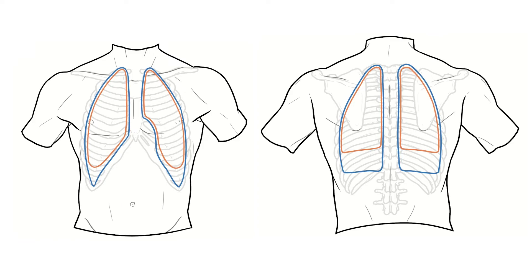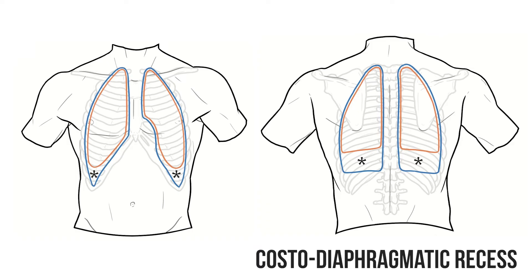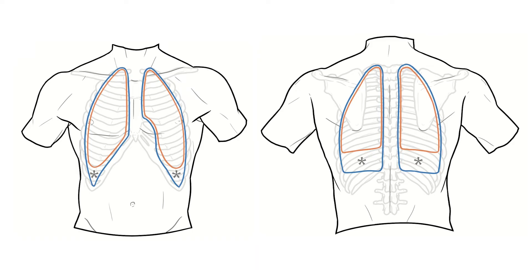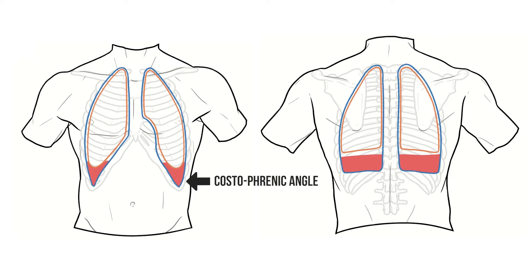This creates a potential space under the lungs and between the ribs and diaphragm, known as the costo-diaphragmatic recess. When taking a deep breath this recess provides extra space for expansion of the lungs, but thanks to gravity it's also where any fluid in the pleural cavity tends to collect. In particular, fluid will end up at this junction between the chest wall and the diaphragm — the costo-phrenic angle.